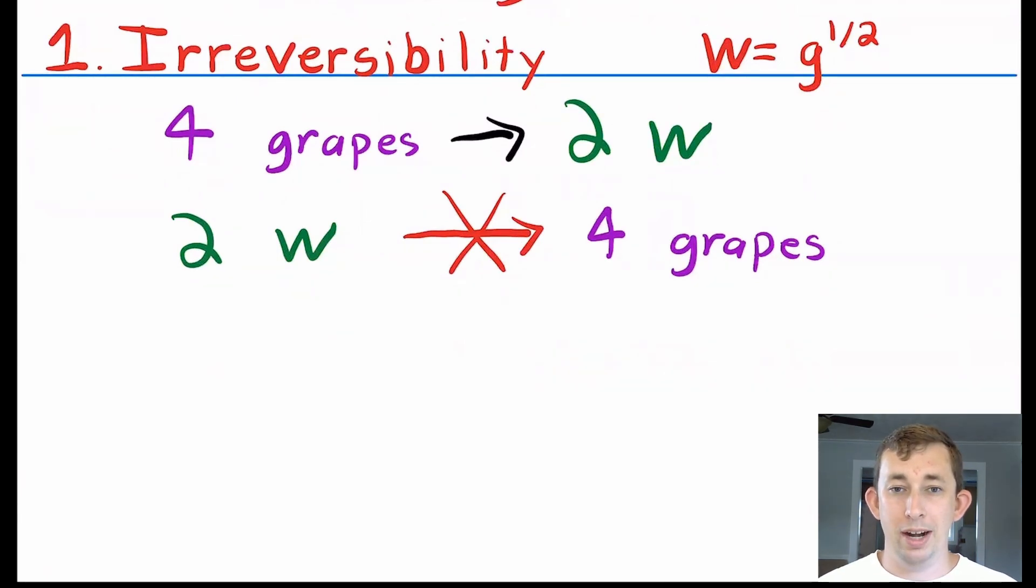For example, I can put in four grapes into our machine and get two bottles of W out of it, but I can't put two bottles of W back into the machine and expect to get four grapes on the other side. That is what it means to be irreversible.